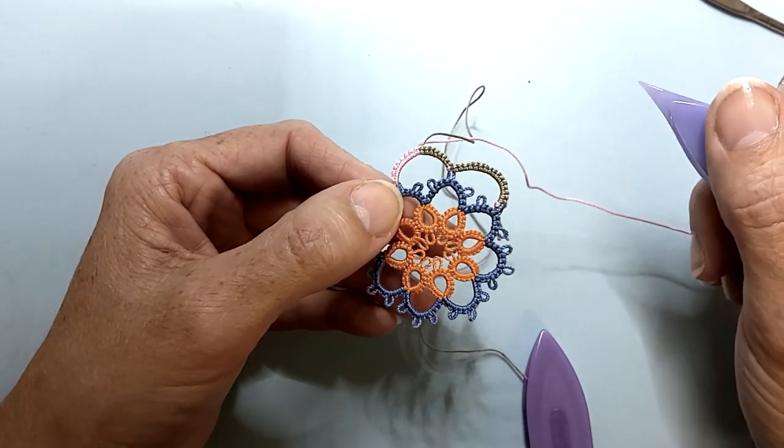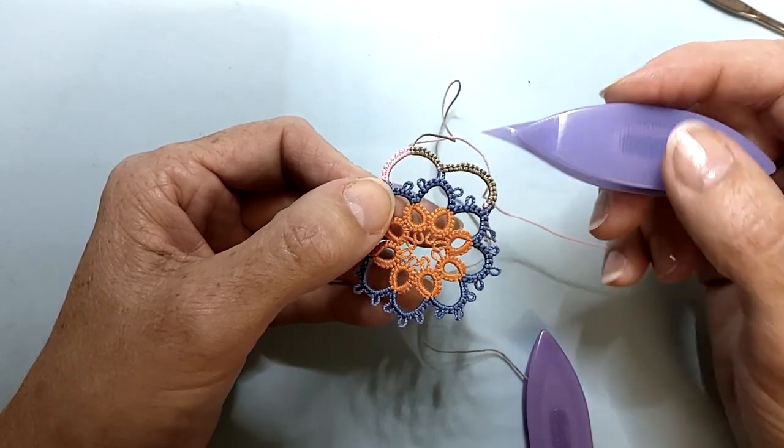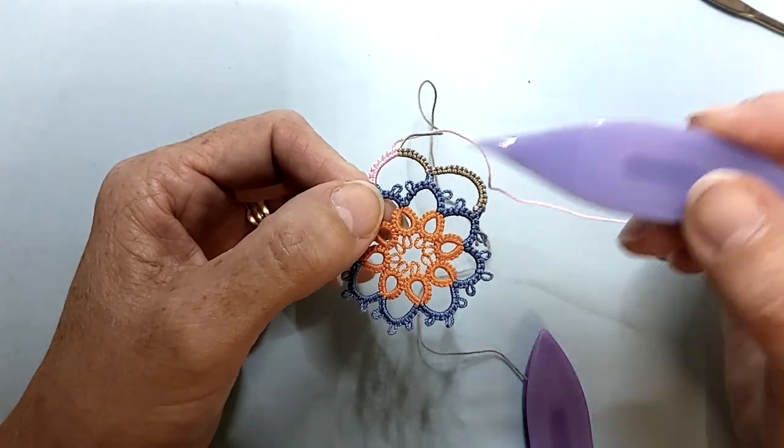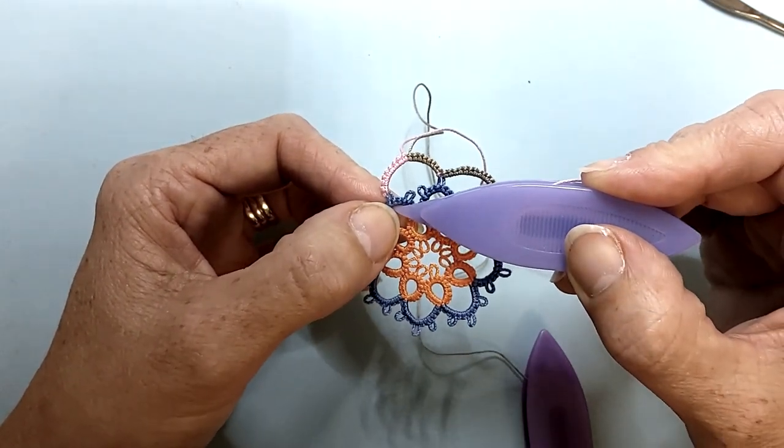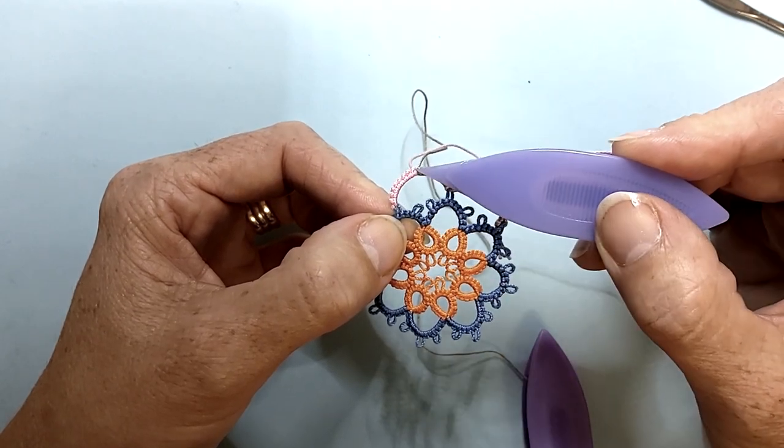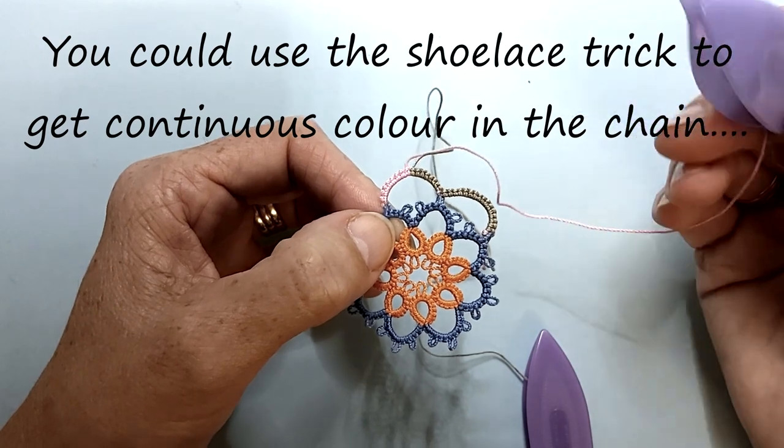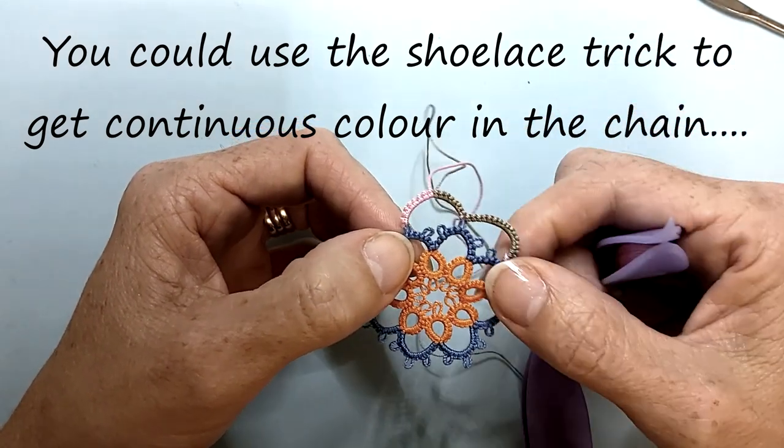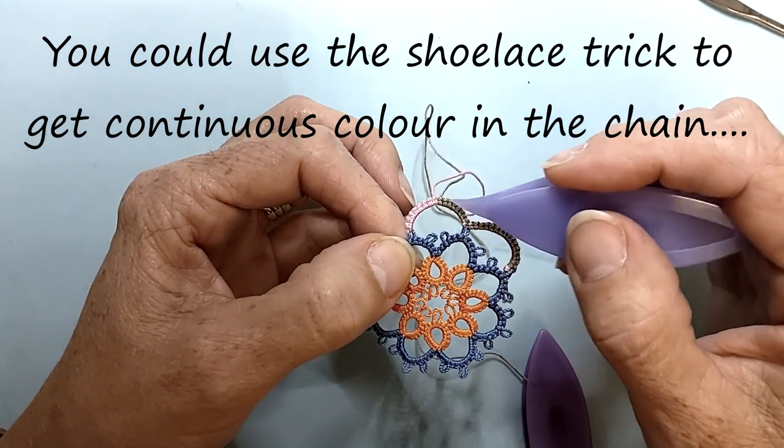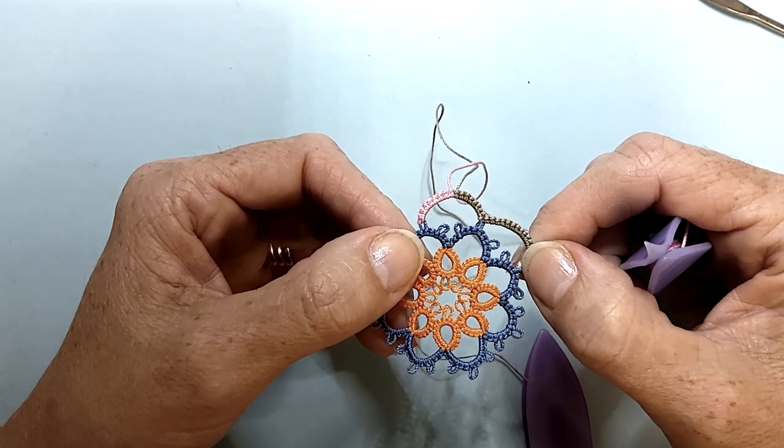There's another reason for the two colors today, and that's to show what happens when we work a split chain using two colors or if we used a variegated thread. Remember that our core thread is lock joined here and then used to make the stitches for the second half of the chain, giving us a two colored chain. Even if we had the same variegated thread in both shuttles, it's highly unlikely that the variegation would match up. It's just something to keep in mind if your pattern calls for split chains.